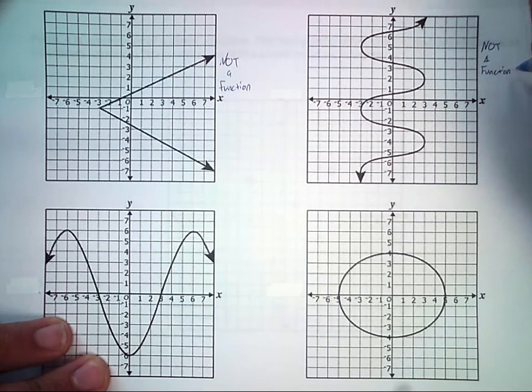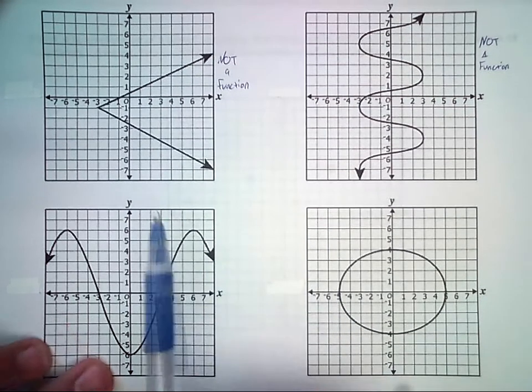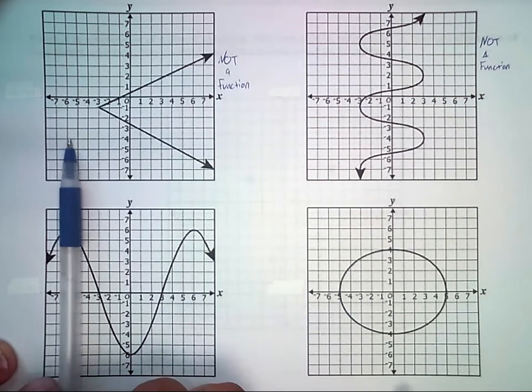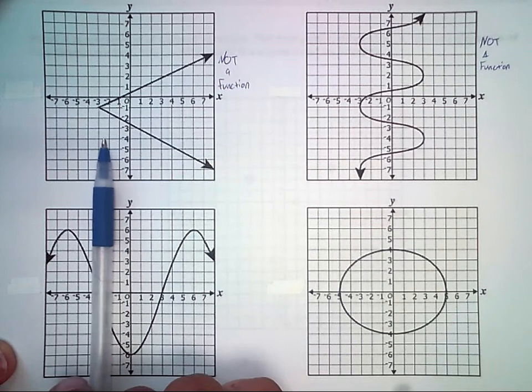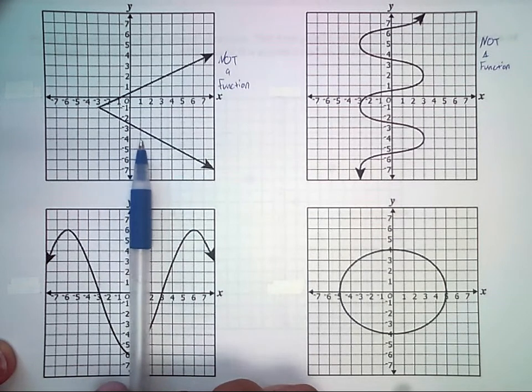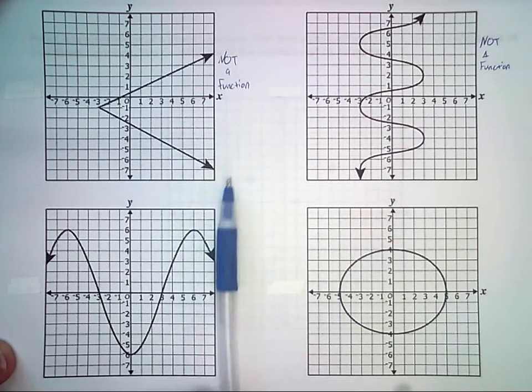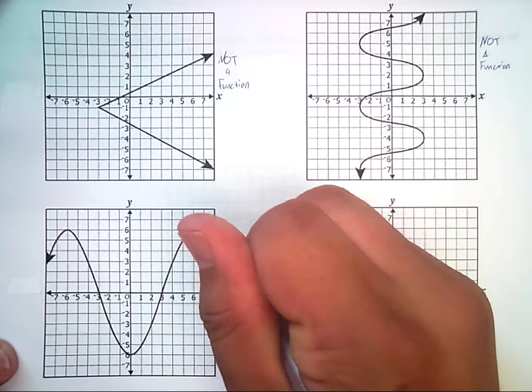However, if we look at the third graph down there, we can see that if I take my pen and move left to right, it only ever touches the graph once. It might get close, but it's only ever going to touch it once at any time. So this is indeed a function.